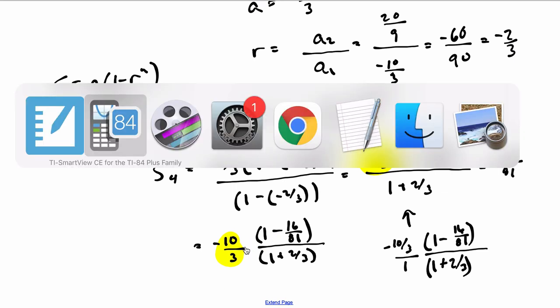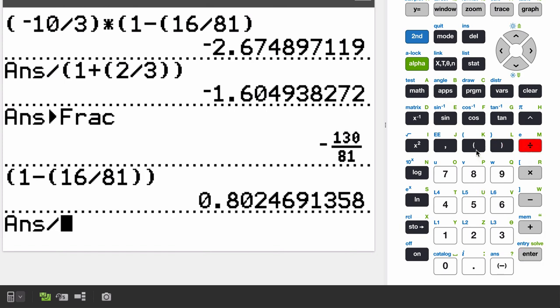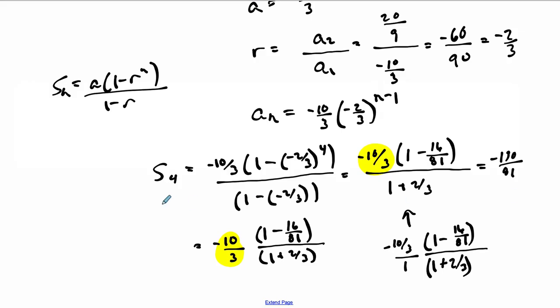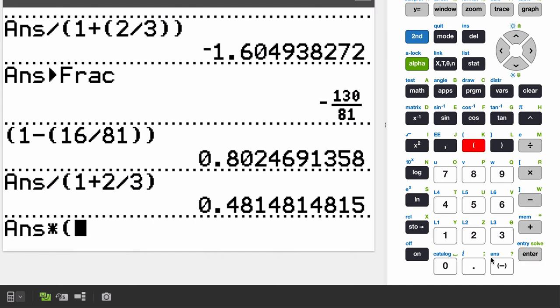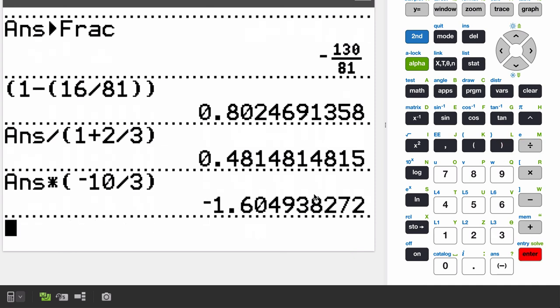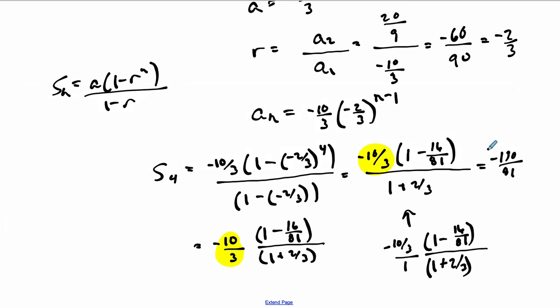And then in the other one, let's just confirm that it is the same. So in the numerator I have 1 minus 16 over 81, and then I'm dividing that by 1 plus 2 thirds. Then that took care of this, and then now I'm multiplying that result by negative 10 thirds. Here we go. Then there's the same number as before. And if I go to math and fraction, negative 130 over 81. I brought that point up because some students asked about it, but regardless we get the sum here.